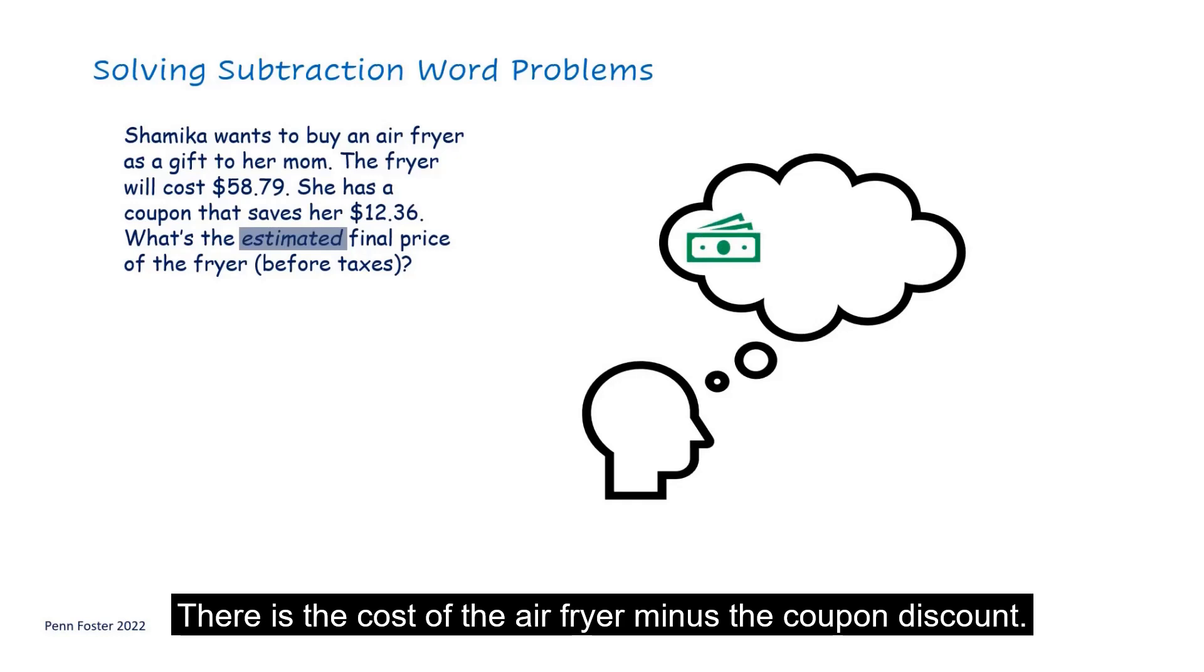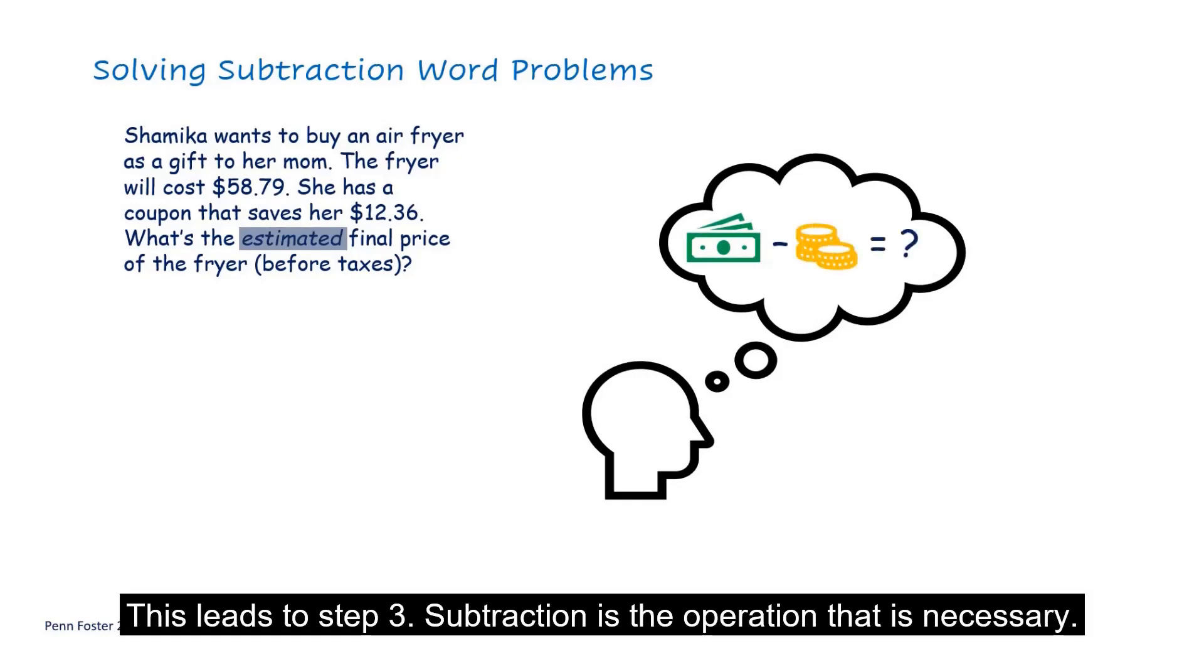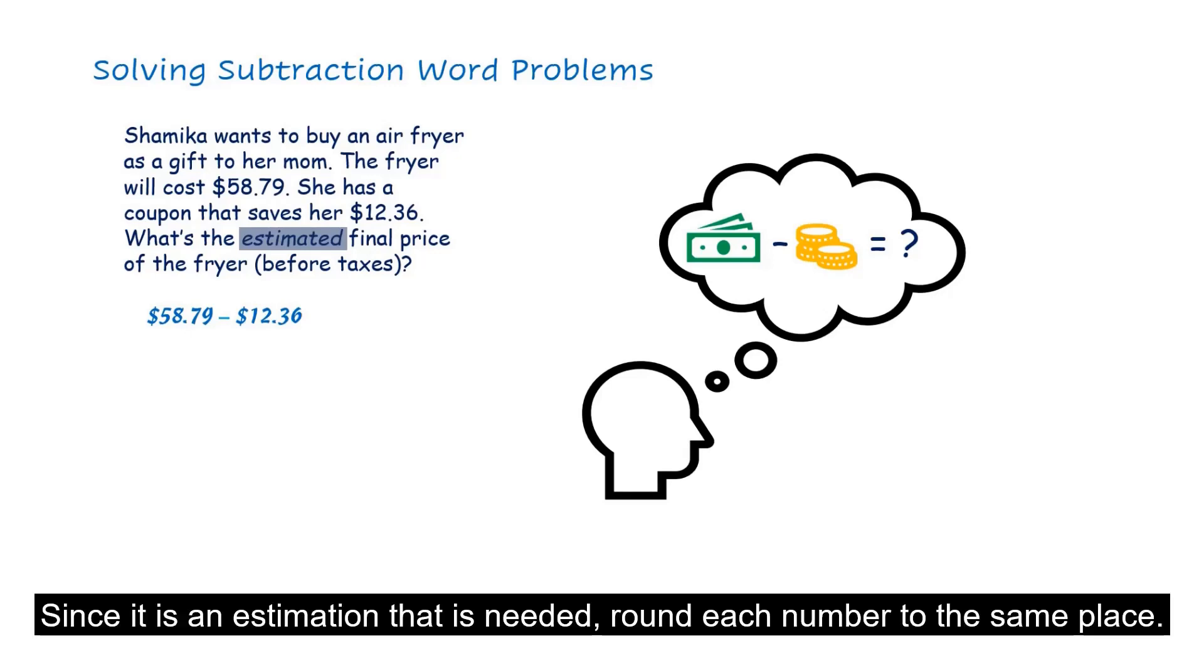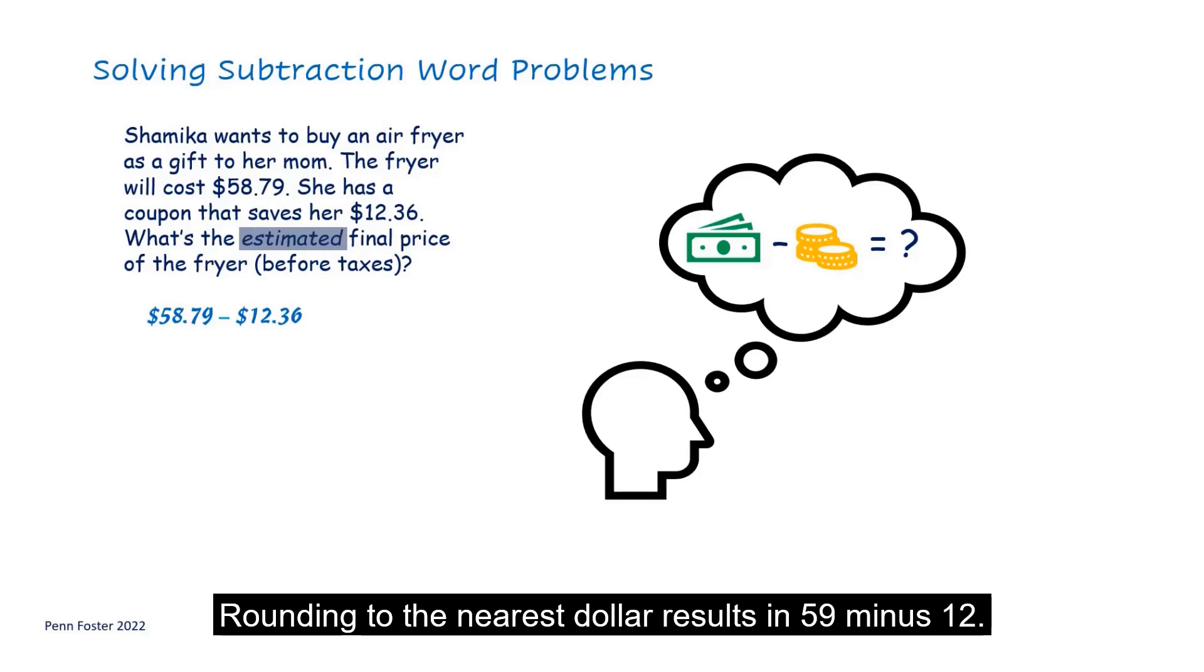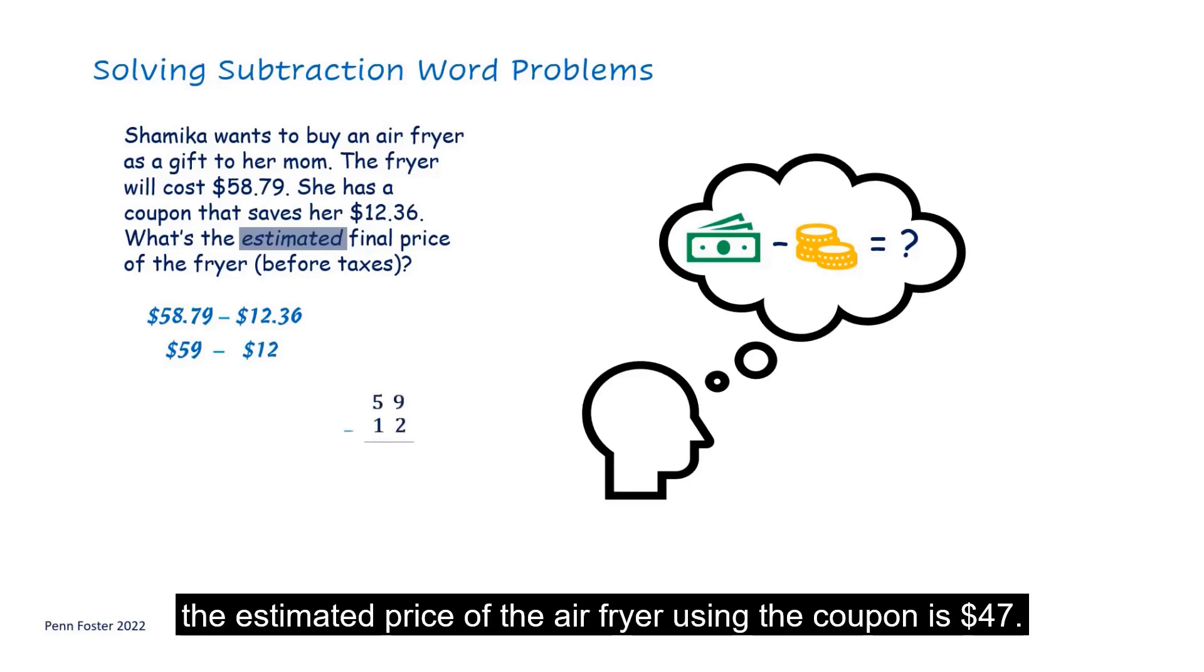There's the cost of the air fryer minus the coupon discount. This leads to step 3. Subtraction is the operation that is necessary. Next, perform the math needed to find the answer. Since it is an estimation that is needed, round each number to the same place. Rounding to the nearest dollar results in 59 minus 12. Subtracting column by column, the estimated price of the fryer using the coupon is $47.